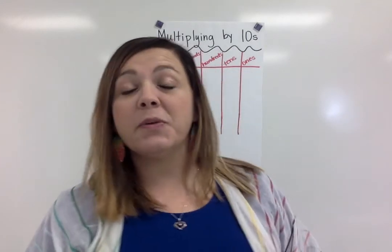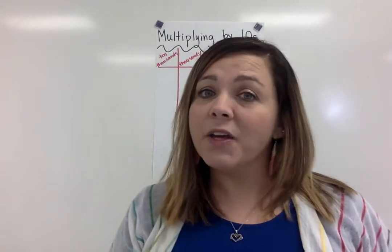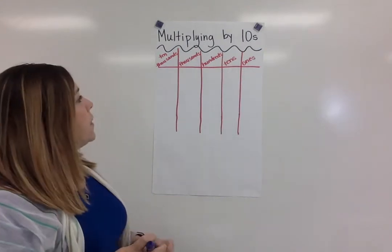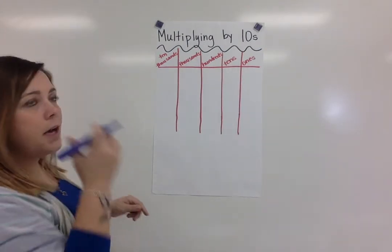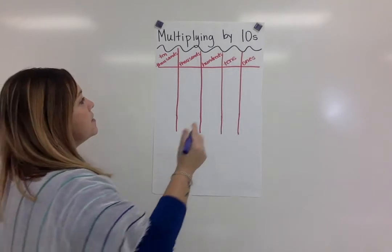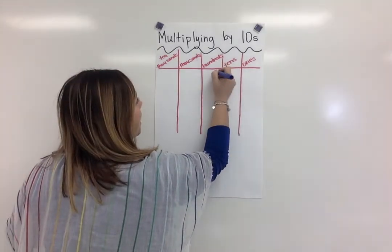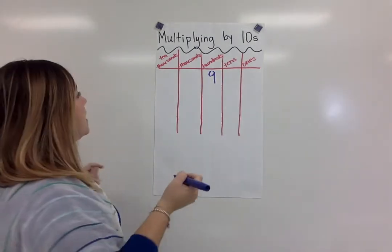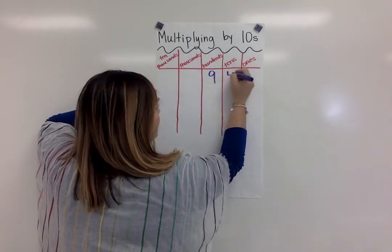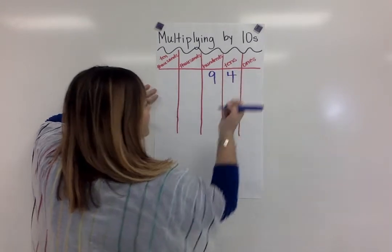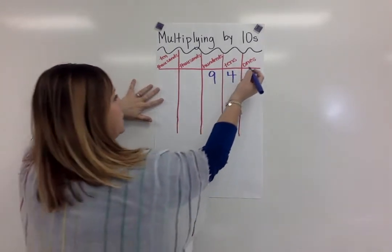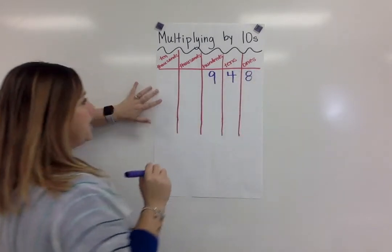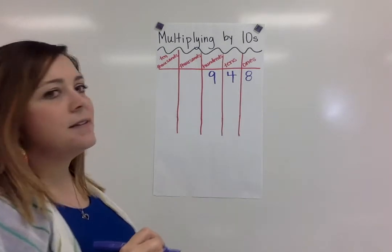First, we are going to use a place value chart to show the value of the number 948. The 9 goes in the hundreds place and has a value of 900. Then the 4 is in the tens place and has a value of 40, and finally we have an 8 in the ones place with a value of 8. That gives us 948.